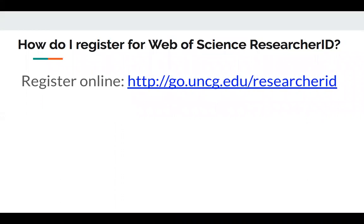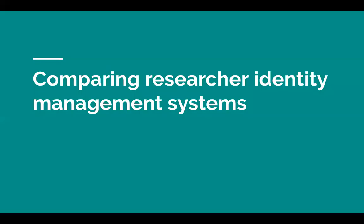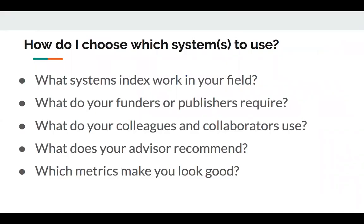How do you register for Researcher ID? There's a go link that will take you to the registration page. Now, a couple of questions: do you need more than one researcher ID or profile, and how do you choose which systems to use? When making that choice, think about which ones index work in your field, and whether your funders or publishers require certain systems like ORCID. If your colleagues and collaborators are using certain systems, those might be useful for you too. If you're a graduate student, your advisor might have recommendations.